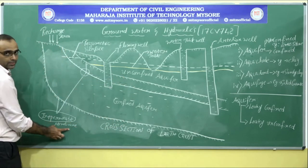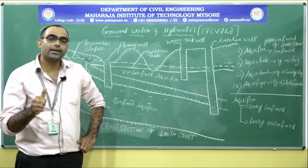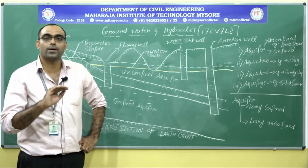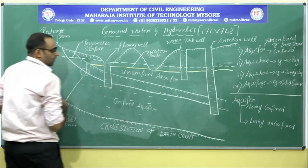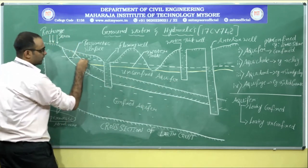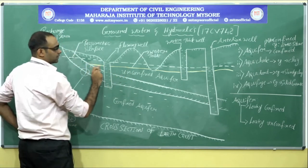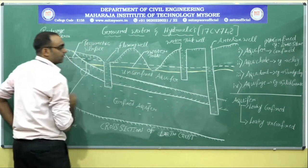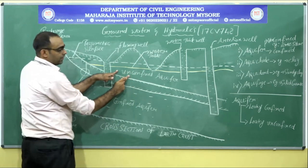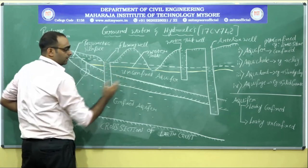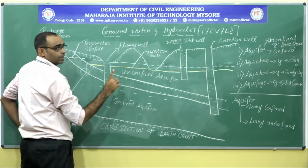An impermeable membrane does not allow any sort of water to seep through it. For the unconfined aquifer, the bottom portion is an impermeable membrane and the top part is the free water surface — named as the water table. An unconfined aquifer is a geological formation or structure which has a free water table at the top and an impermeable membrane at the bottom.